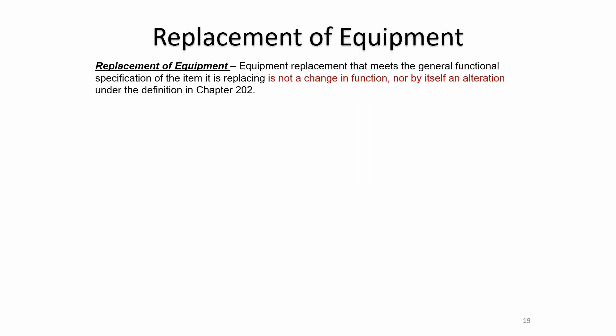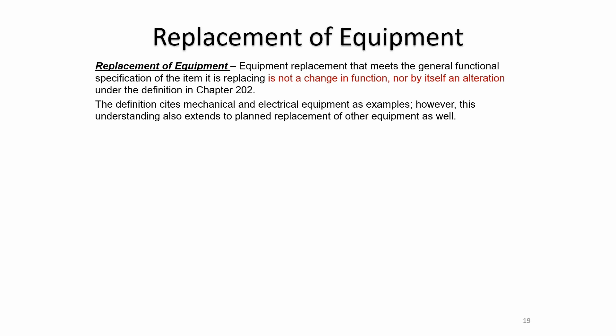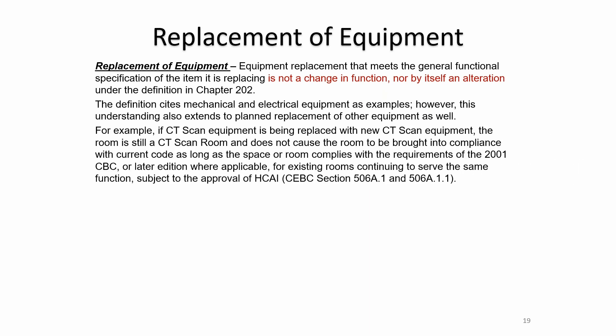When replacing equipment, equipment replacement that meets the general functional specification of the item being replaced is not a change in function, nor by itself an alteration. The definition cites mechanical and electrical equipment as examples, but this understanding extends to planned replacement of other equipment as well. For example, if a CT scanner is being replaced with a new CT scanner, the room is still a CT scan room and does not need to be brought into further compliance with current code, as long as the space complied with requirements of the 2001 CBC or later edition.